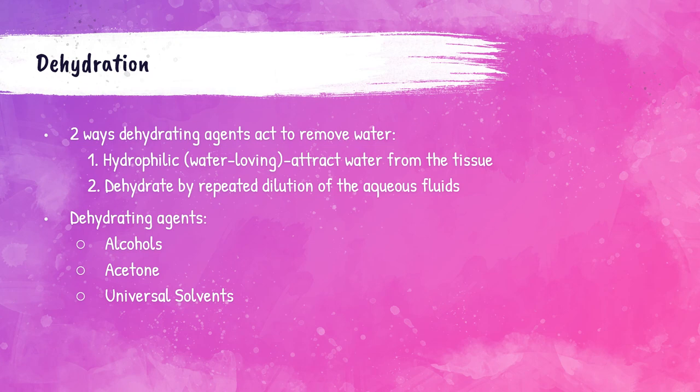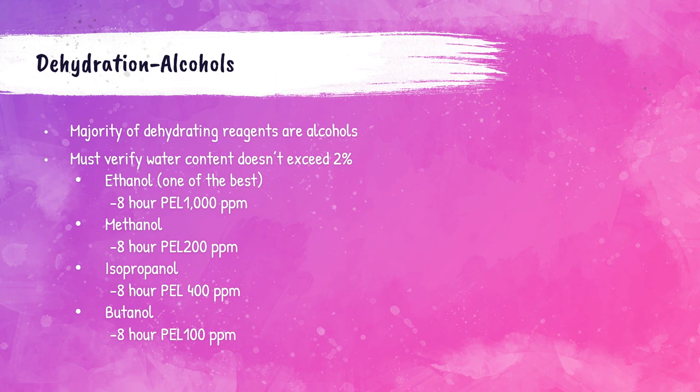Most dehydrating agents used are alcohols. It's important to ensure the alcohol used does not contain more than two percent water. A way to check this is by putting alcohol into either xylene or toluene — if there is turbidity, the alcohol contains more than two percent water. Eosin stain is often added to alcohol as a dehydrating agent to dye the tissue a light pink, allowing small biopsy specimens to be more easily identifiable at the tissue embedding station.